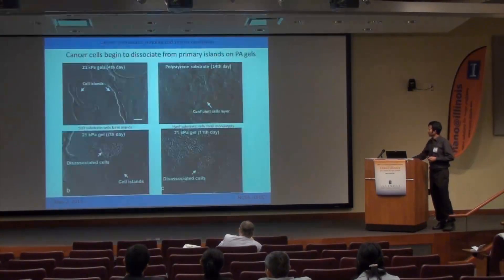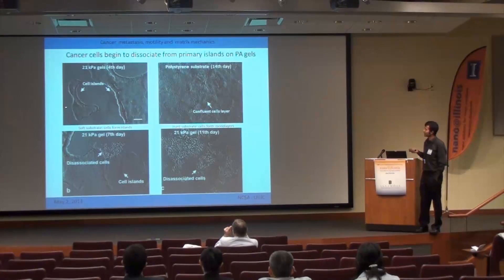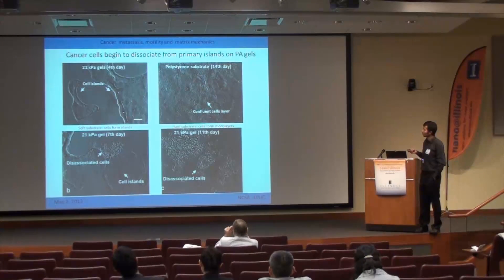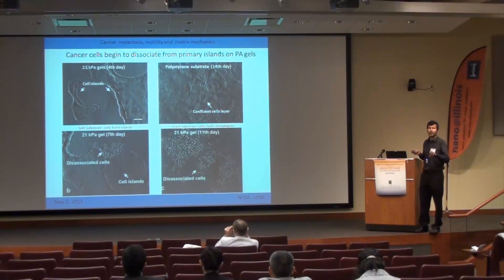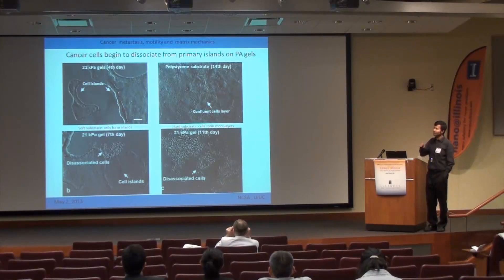HCT8 cells on gels form cell clusters consisting of numerous cells depending on initial plating density. As time progresses, cell proliferation mainly happens at the periphery after two days, and thickening — some sort of three-dimensional structure — occurs at the periphery. In contrast, on polystyrene dishes, they form a monolayer and don't show this kind of 3D structure.